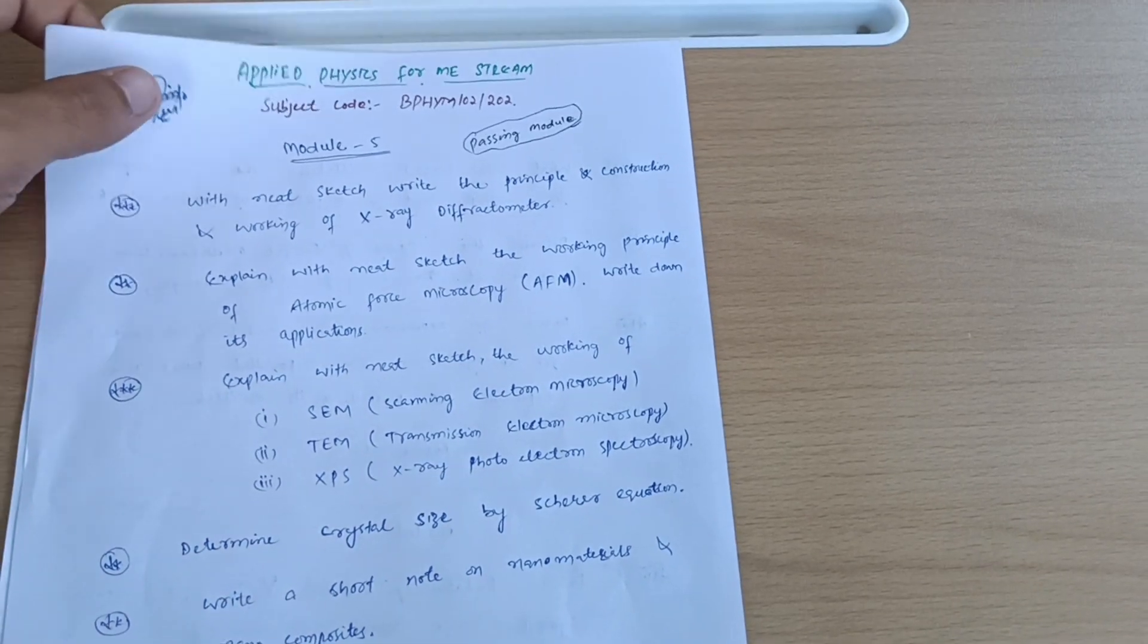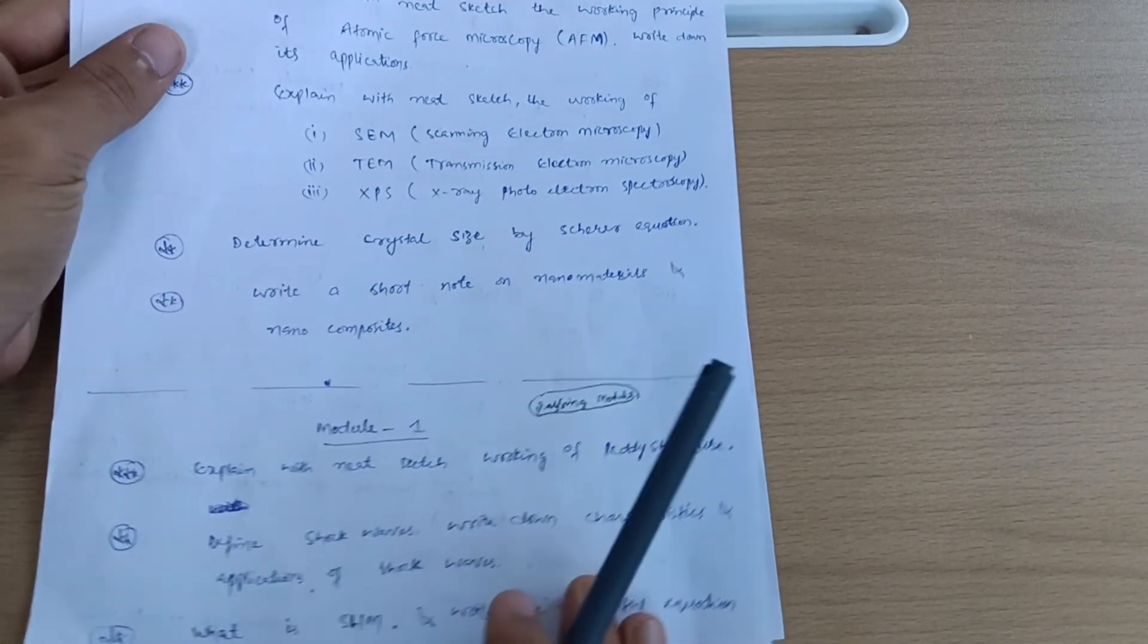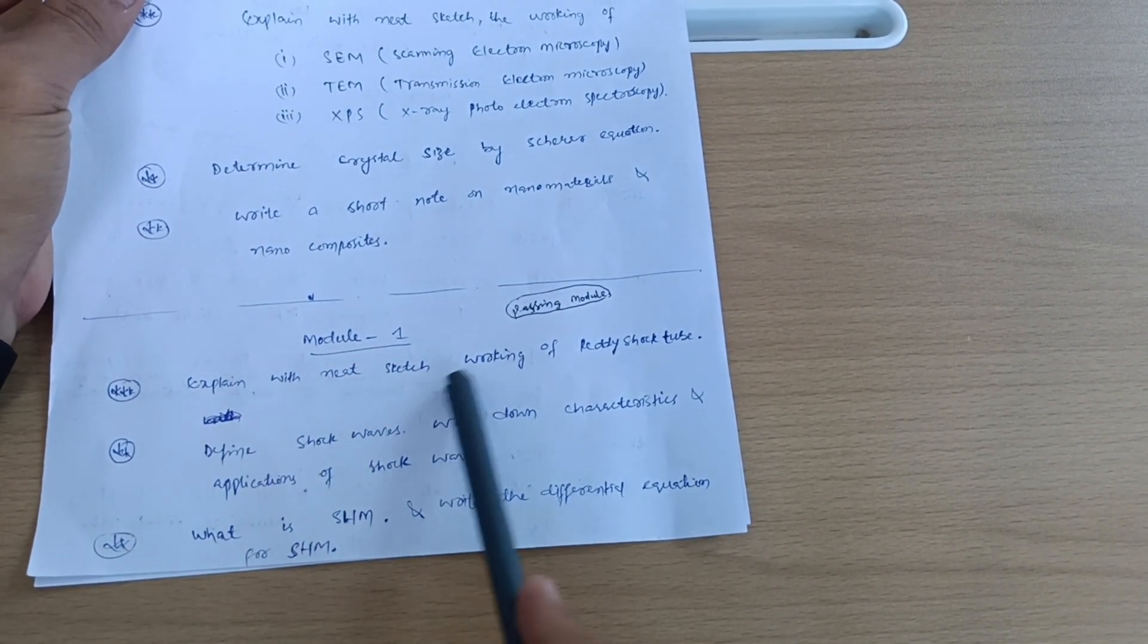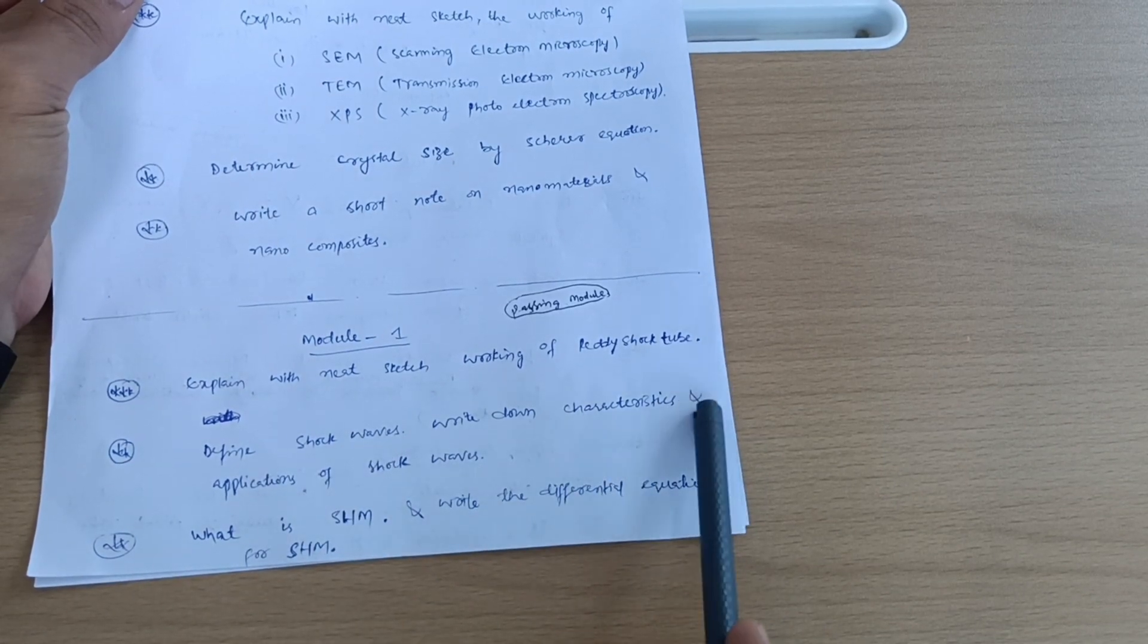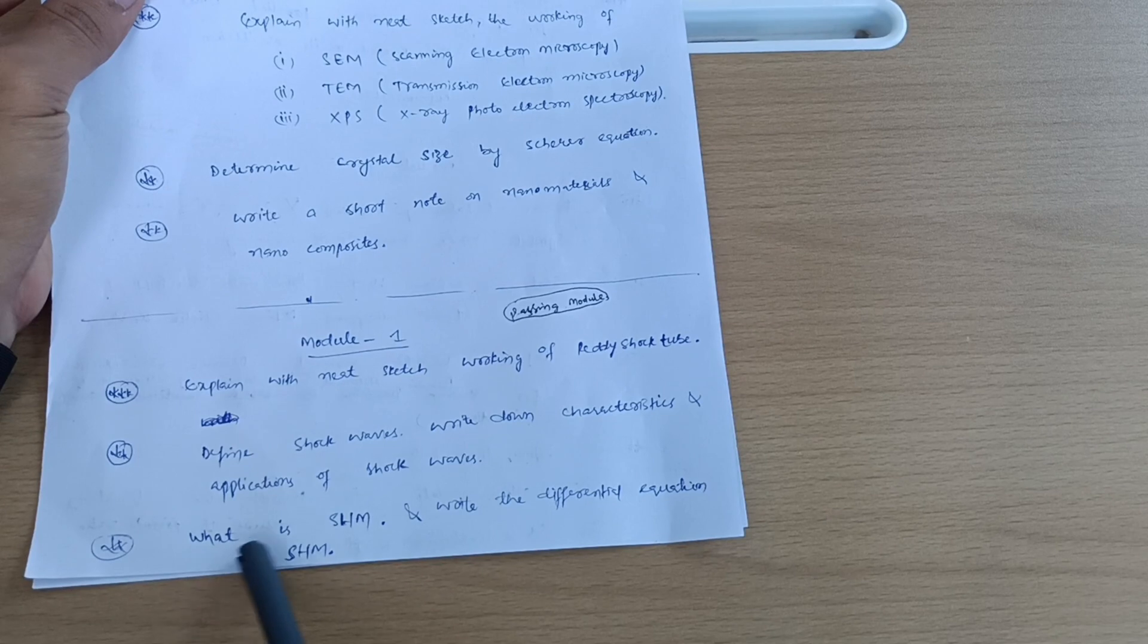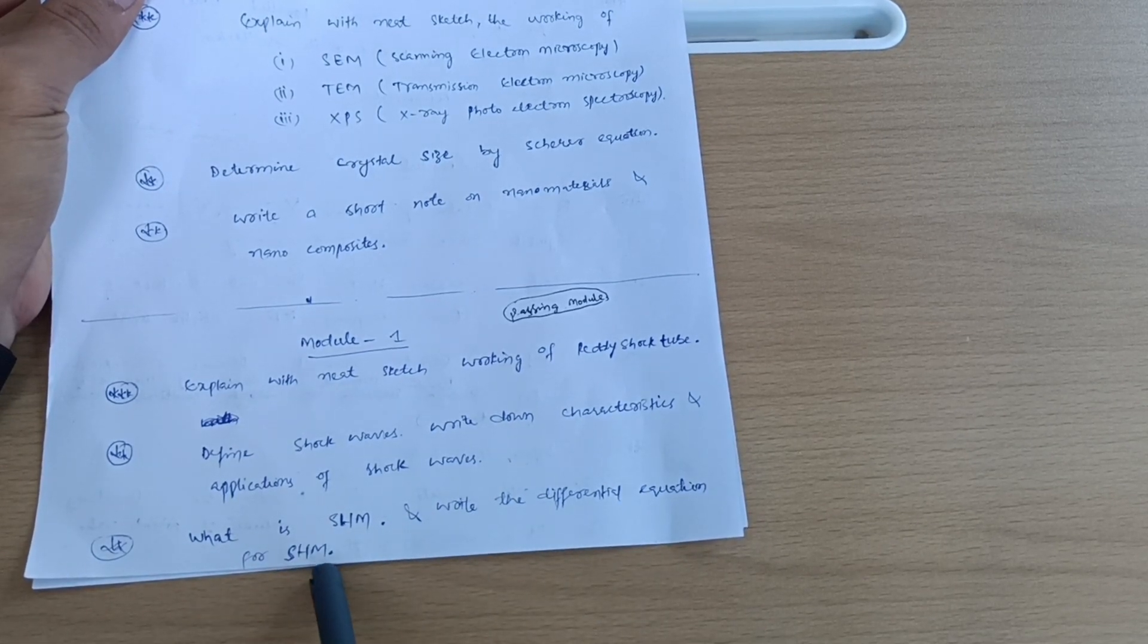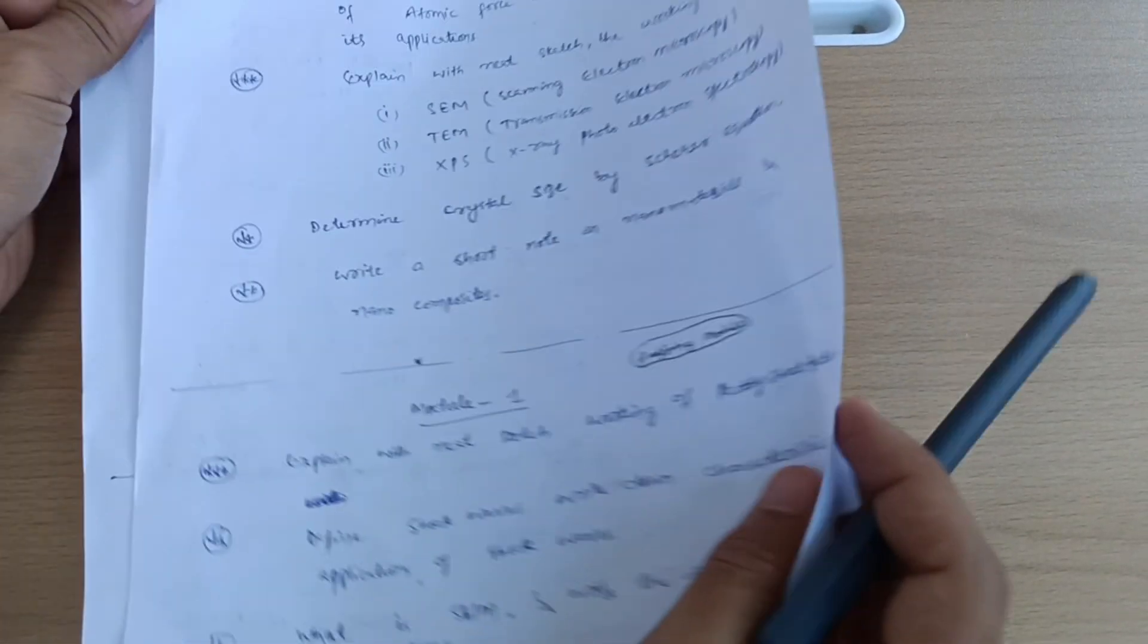Module 1 is again a passing module in which you have to cover some super important questions like: explain with neat sketch working of Rieke shock tube and define shock waves, write down characteristics and applications of shock waves. What is simple harmonic motion and write the differential equation for SHM - there is no derivation for it, only you have to write down the differential equation for simple harmonic motion.